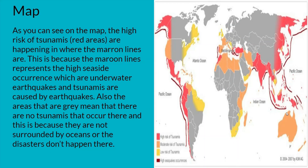As you can see on the map, the high risk of tsunamis, which are the red areas, are happening where the maroon lines are. This is because the maroon lines represent the high seaside occurrence, which are underwater earthquakes, and tsunamis are caused by earthquakes. Also, the areas that are grey on the map mean that there are no tsunamis that have occurred there yet, and this is because they are not surrounded by any oceans or there haven't been any disasters that happened there yet.